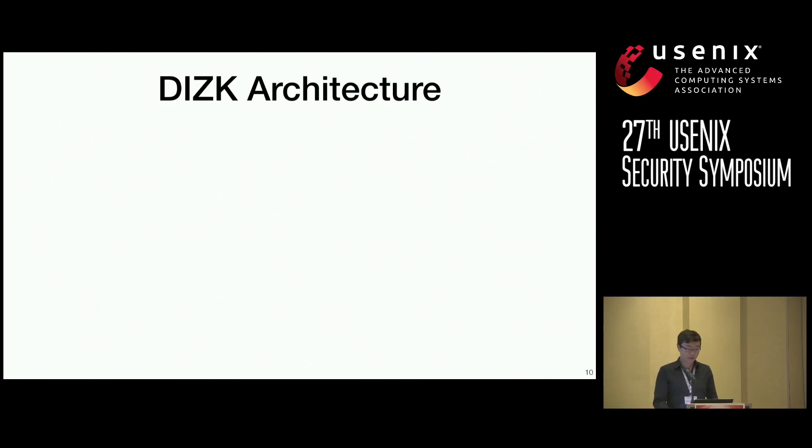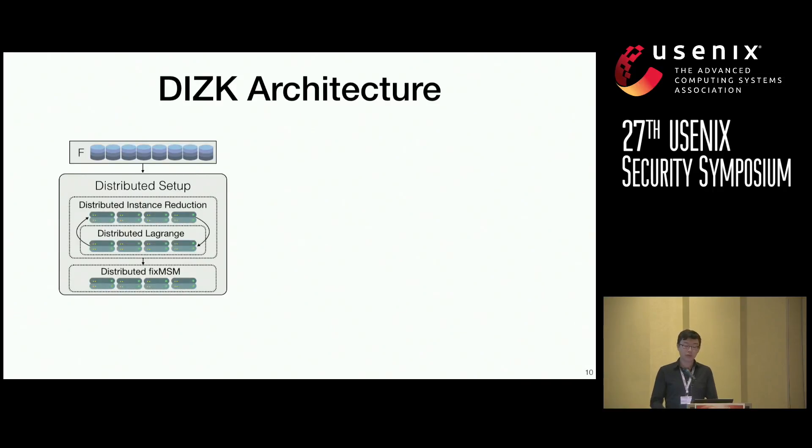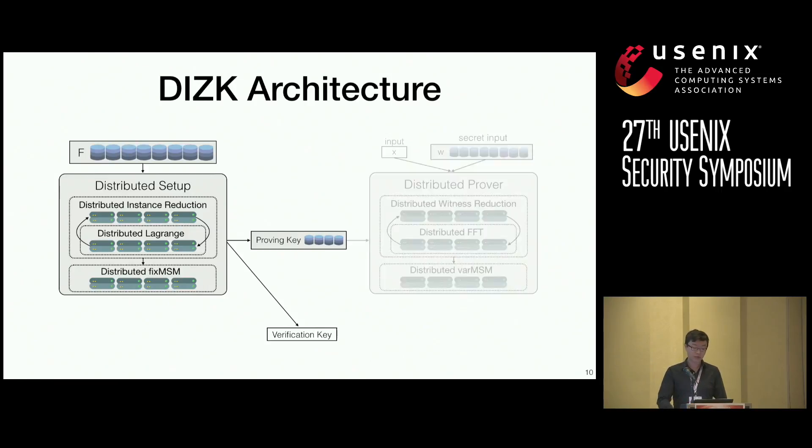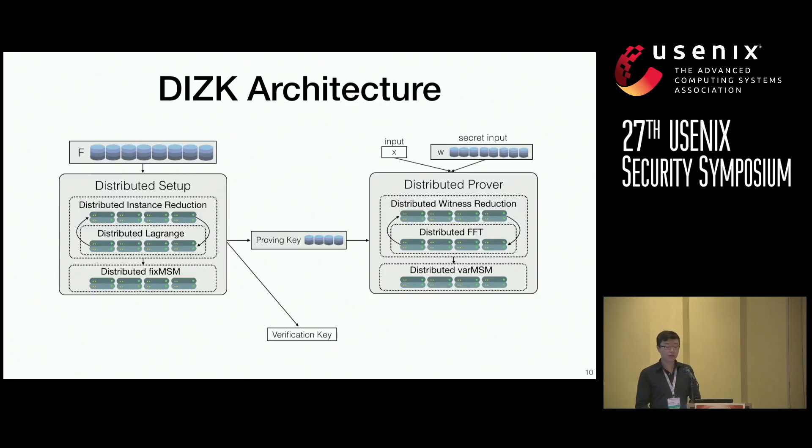For DIZIK, our architecture looks like this. So we start with the setup. It turns out it's not enough to keep the sub-components of the setup monolithic, and so we distribute the setup by implementing distributed algorithms for each of the sub-components in the setup. The distributed setup then outputs a distributed proving key and a small verification key. Just as before, we distribute the prover by distributing the monolithic sub-components of the prover. And lastly, the verifier will then check that the proof is valid. And again, we forego distributing this step as it is extremely cheap to run.